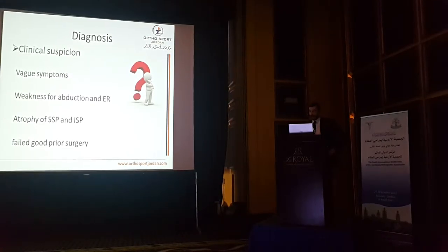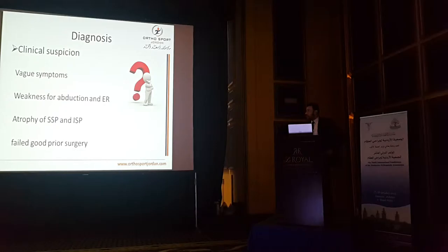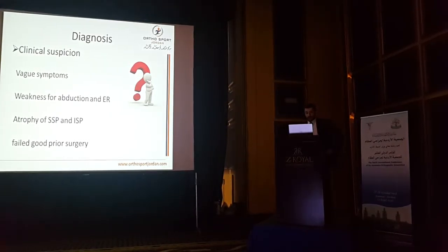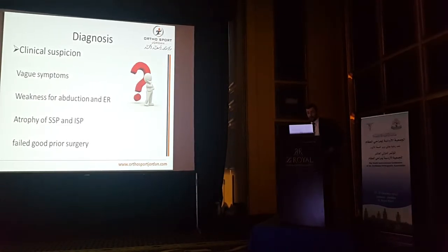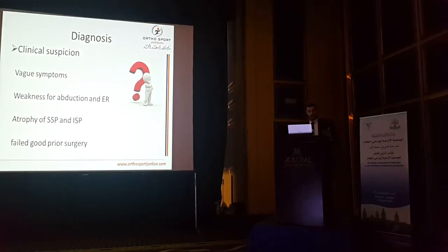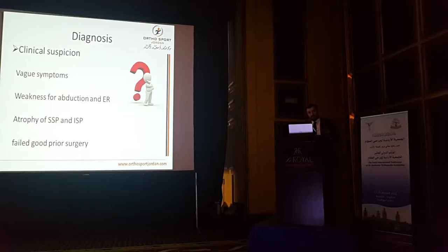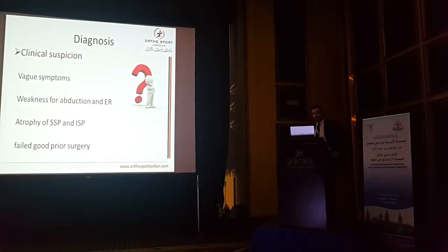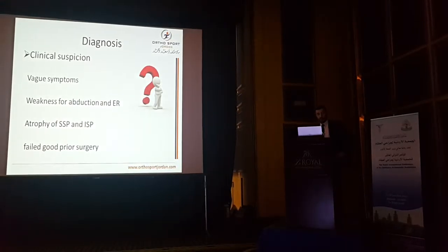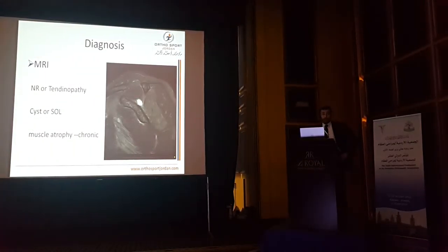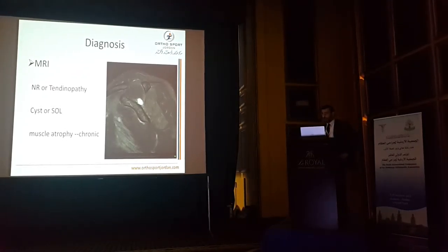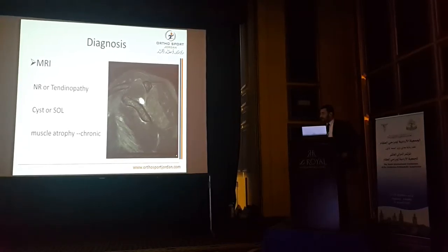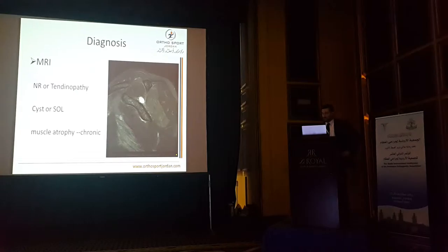Diagnosis is sometimes difficult and needs clinical suspicion. Whenever you see a patient with vague pain, weakness of abduction and external rotation, and atrophy of the spinatus muscles, and you think it's a rotator cuff problem — but the MRI comes back normal — you must think of suprascapular nerve entrapment, especially in patients with failed previous good surgery. If a patient had decompression, it was good surgery, but the patient is still complaining, you have to think of suprascapular nerve entrapment. MRI may be normal in idiopathic cases or may show only tendinopathy. However, MRI is helpful to identify cysts, paralabral cysts, or space-occupying lesions compressing the nerve, and can show muscle atrophy, degree of atrophy, and associated fatty degeneration.